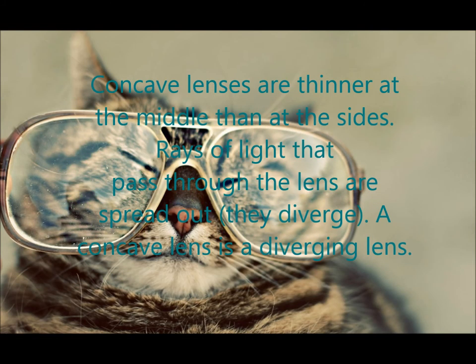Concave lenses are thinner at the middle than at the sides. Rays of light that pass through the lens are spread out — they diverge. A concave lens is a diverging lens.